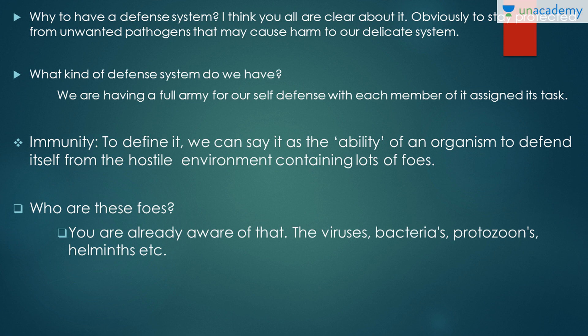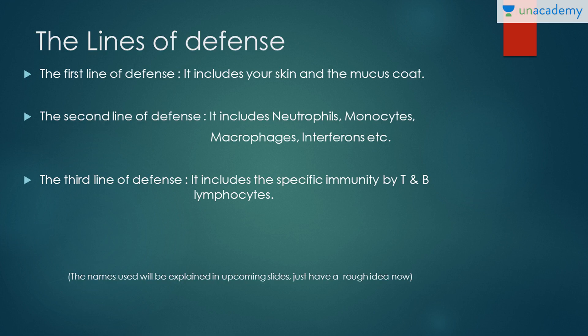What is immunity? Going by the definition — because that's very easy to grasp — immunity is the ability of an organism to defend itself from the hostile environment containing lots of foes. The environment with all those pathogens that can invade our body and cause disease. Since we have a delicate immune system with a big army, each member assigned a particular task, we have several lines of defense in our immune system.